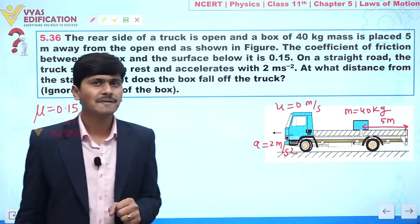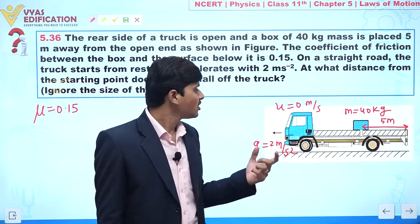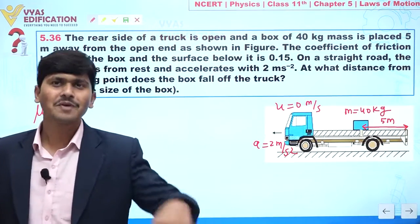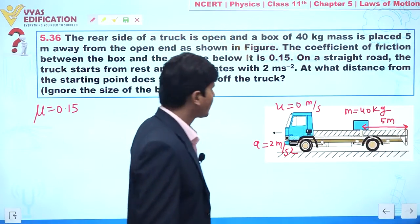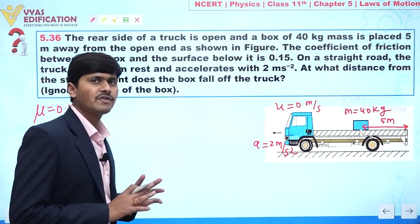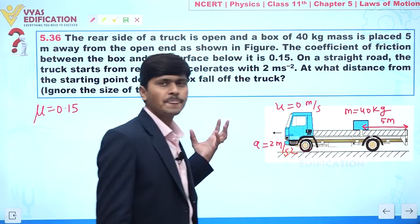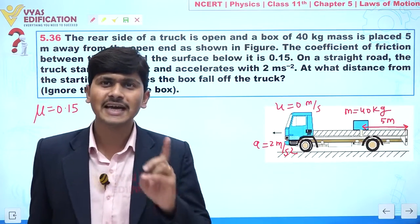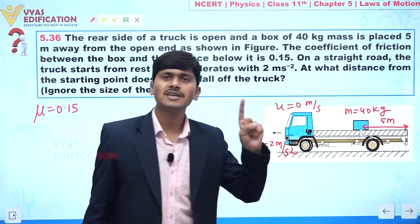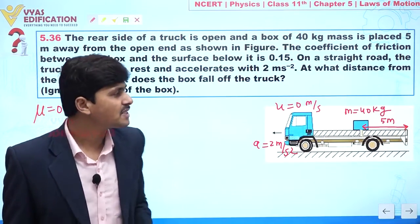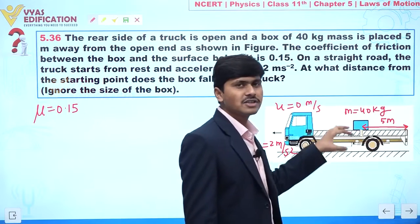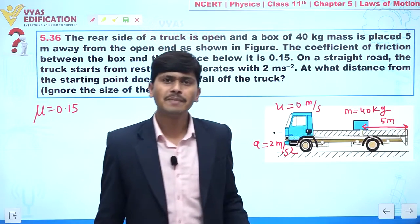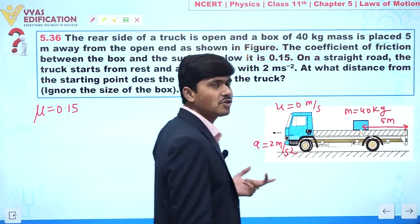The objective is to calculate the total distance covered by the truck before the box falls off. The strategy: since the truck is accelerating, the box is in a non-inertial frame. If we place an observer on the truck, the observer will see the box moving in a backward direction because a pseudo force comes into picture.